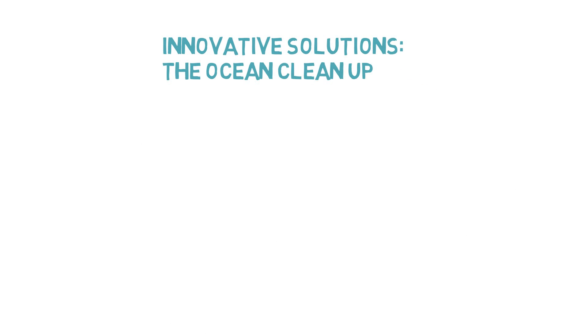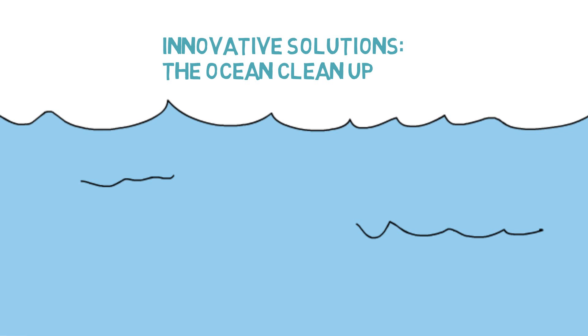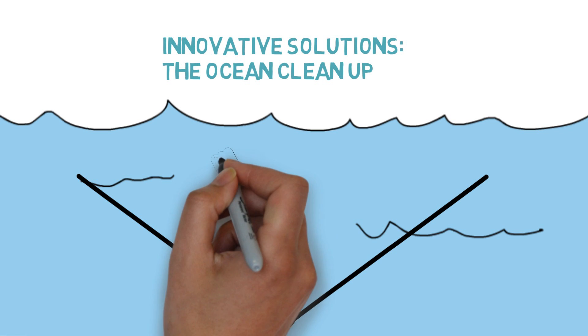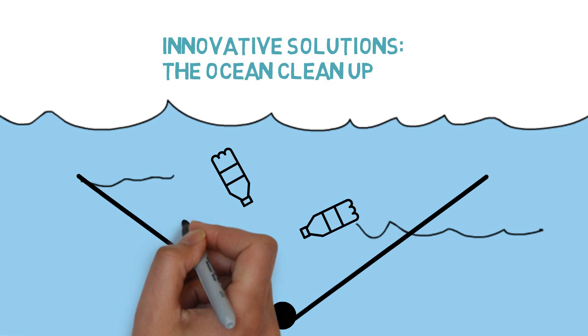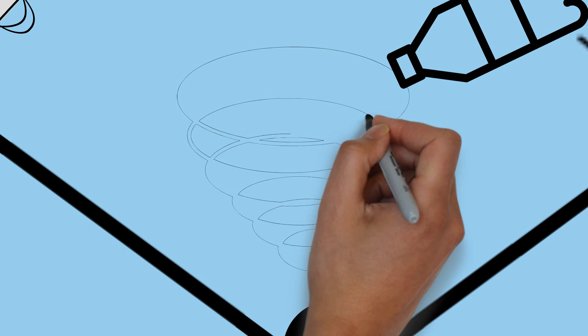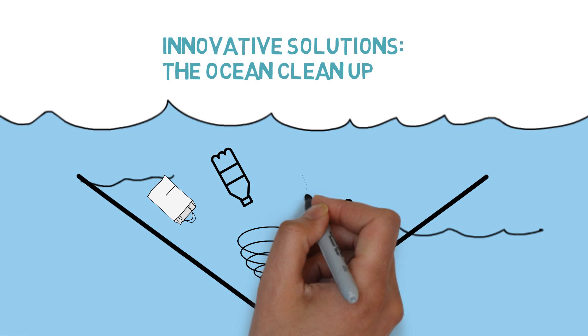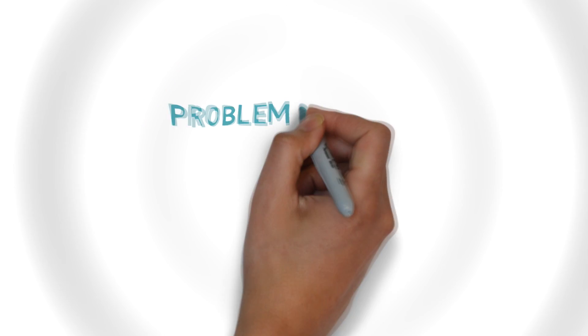different projects are studying innovative solutions. One example is ocean cleanup. It consists of long floating barriers which allow the ocean currents to passively gather the plastic. Once the plastic is concentrated at a central point, it can be collected for recycling.